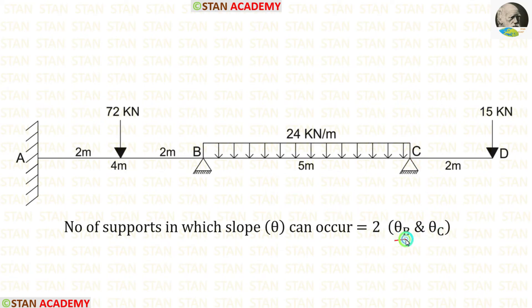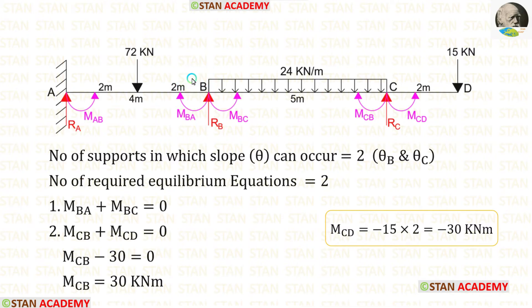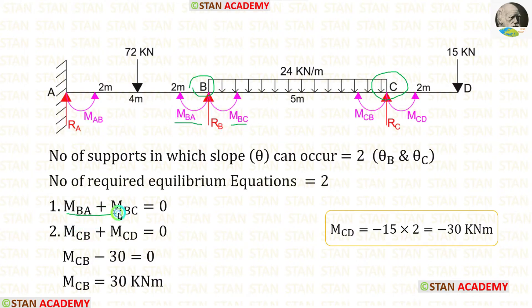If we calculate these two unknowns, we can easily find the final moments. To find them, we need 2 equilibrium equations, which can be formed at joints B and C. At each joint, the summation of moments equals zero. At joint B, MBA plus MBC equals 0.